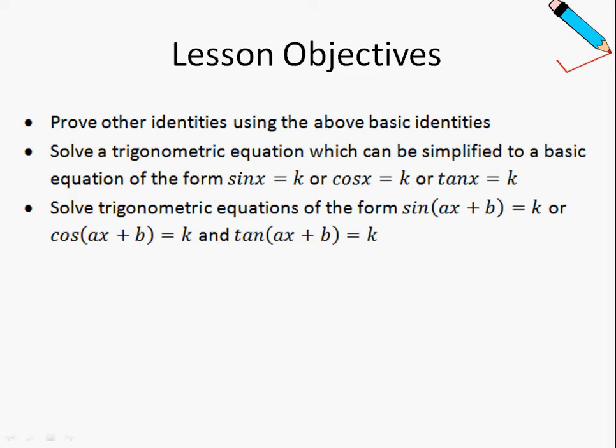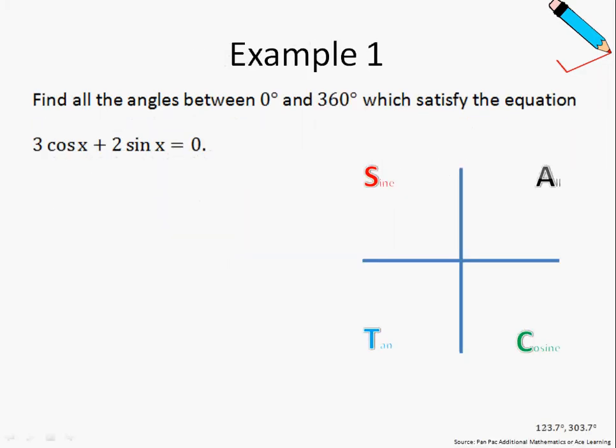Don't worry if it looks kind of confusing now because we'll be looking at some tangible examples later. Lastly, we'll learn how to solve trigonometric equations of the form sin(ax + b) = k, cos(ax + b) = k, and tan(ax + b) = k. So let us look at example number one. We want to find all the angles between 0 degrees and 360 degrees which satisfy this equation.